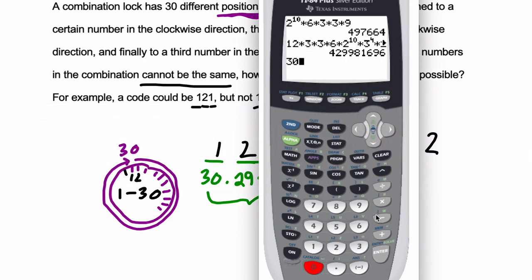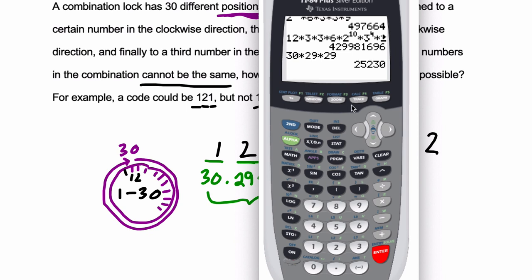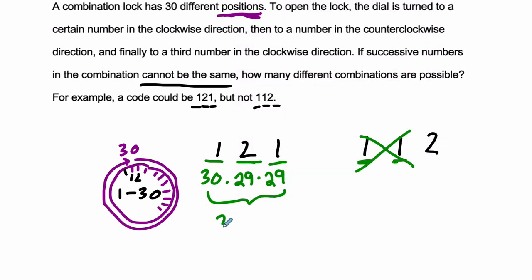30 times 29 times 29 is 25,230, so 25,230.